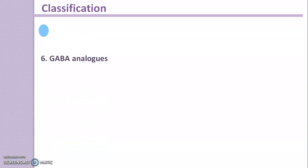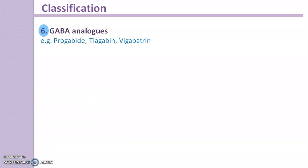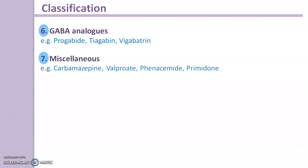The next class is GABA Analogues. Examples are Progabide, Tiagabine, and Vigabatrin. Next is Miscellaneous. Example: Carbamazepine, which contains an iminostilbene ring. Then Valproate, also called Valproic Acid, which is actually an aliphatic carboxylic acid. Next is Phenacemide, which is an acetylurea derivative. And lastly, Primidone, which is a deoxybarbiturate.